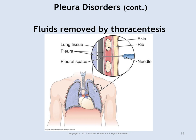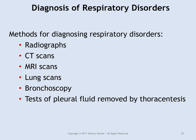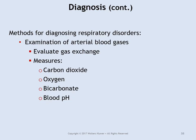Here is a picture of the pleura: the outer pleura, the inner pleura, and the pleural space between them. Hemothorax is when there's blood in that space. Hydrothorax is when there is water in the pleural space. Pneumothorax is accumulation of air in the pleural space.